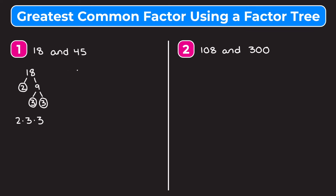Now let's do a similar thing for 45. I'm going to break it up into five times nine. Five is prime, so I'm going to circle it. Nine is not, so I continue to break it up — we'll break nine into three and three. Three and three are both prime, so we circle them, and we are finished with our factor tree. So 45 can be written as three times three times five.